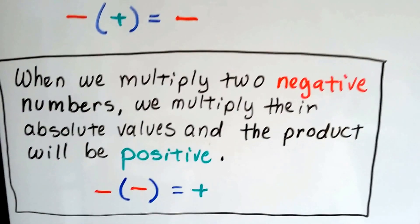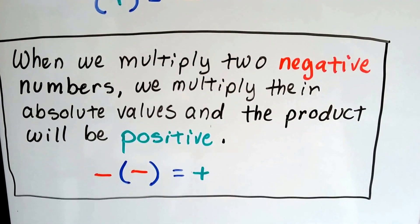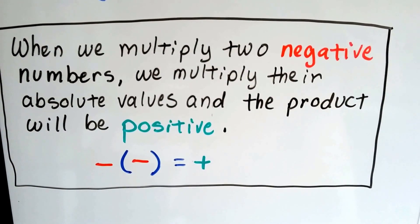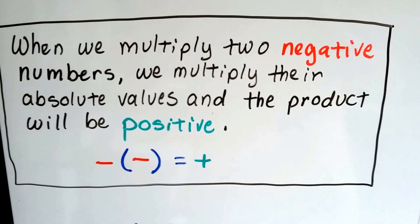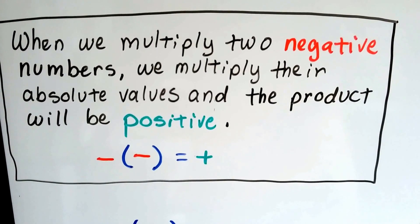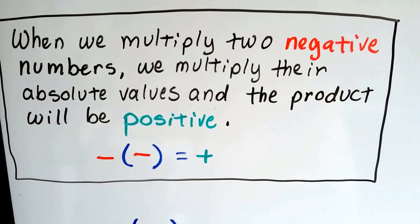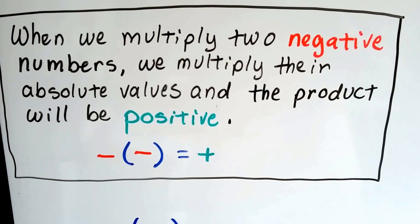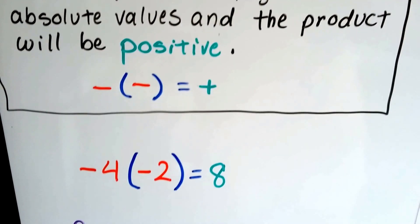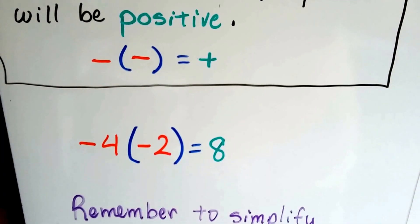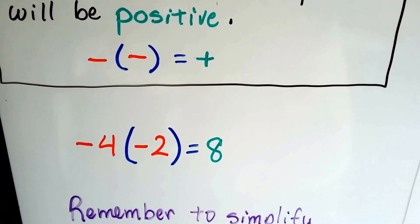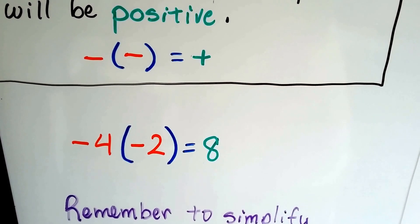When we multiply two negative numbers, we multiply their absolute values, just like we did with the other ones, and the product will be positive. So a negative times a negative gives us a positive — that double negative we talked about previously. For example, negative 4 times negative 2 gives us positive 8.